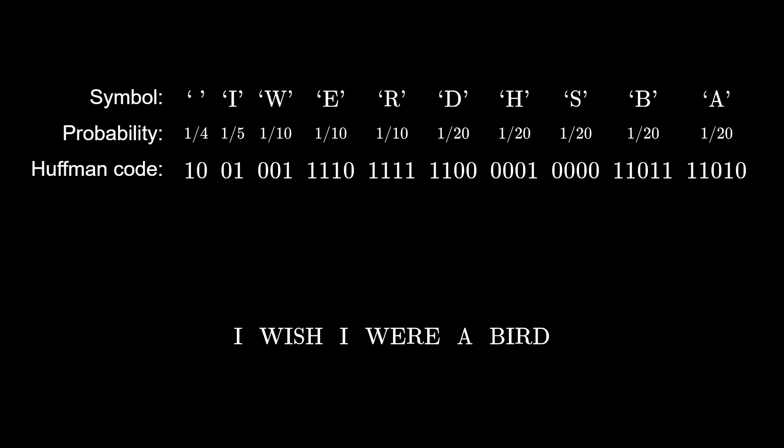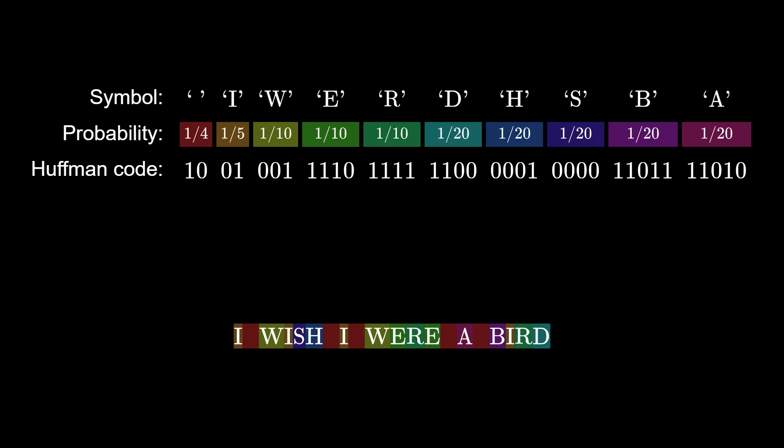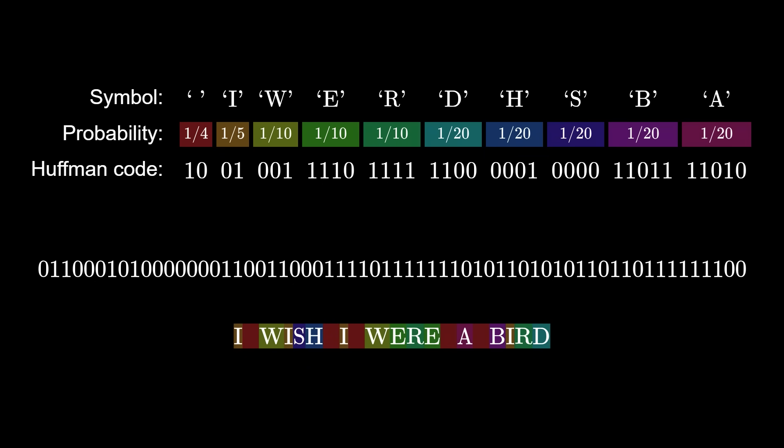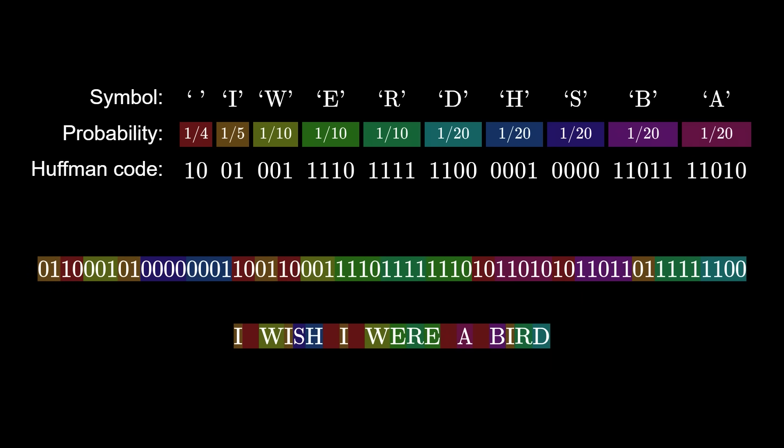Huffman coding is the best algorithm for symbol codes, code systems where each symbol has a separate code, because it assigns shorter codes to more frequent symbols. If the frequencies of the symbols in the message match the given probabilities, the Huffman encoding will be as short as possible. But that's only for a symbol code, where each bit contains information for just one symbol. If we let bits encode multiple symbols, we can do better.